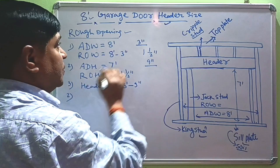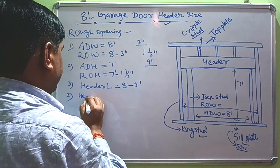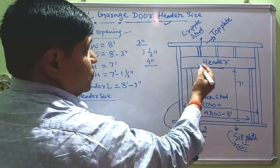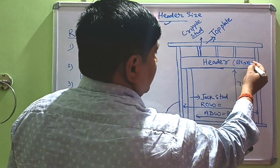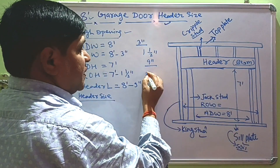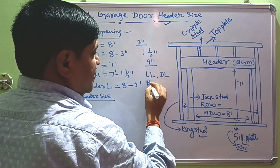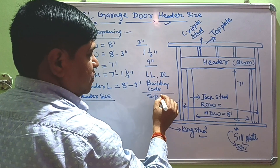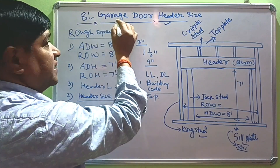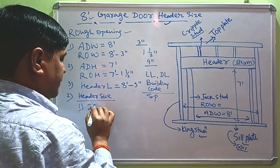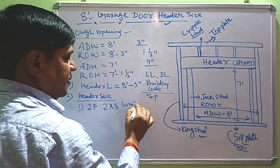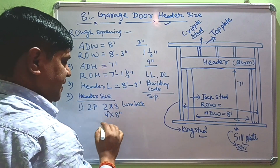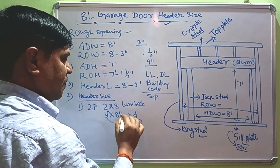This is the rough opening for a standard 8-foot garage door. Now we also find the header size. What header size is required for an 8-foot garage door installation? As you know, the header is a simply-supported beam-like structure, and its size depends on live load, dead load, building code, location, and species of wood. For general consideration, I suggest using two pieces of 2x8 lumber glued together, which can also be written as 4x8 inches.